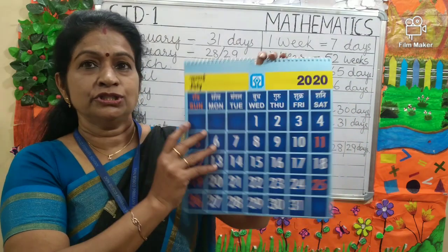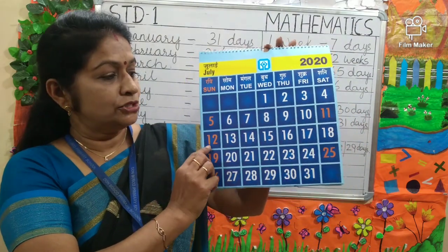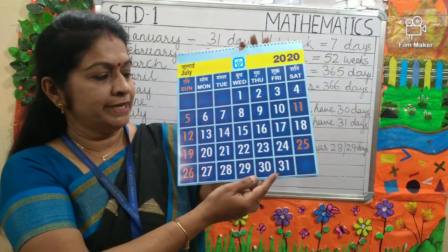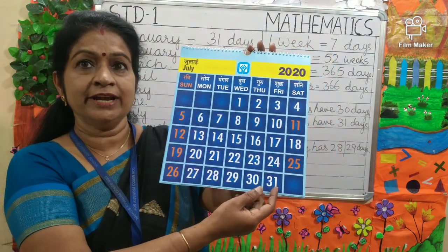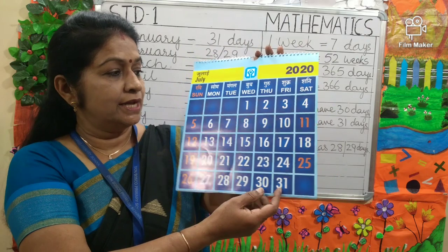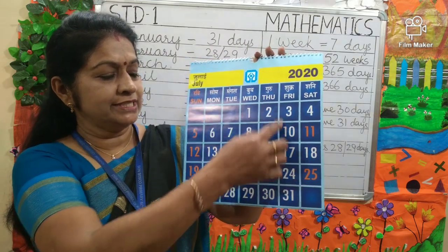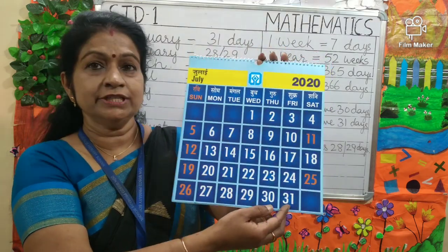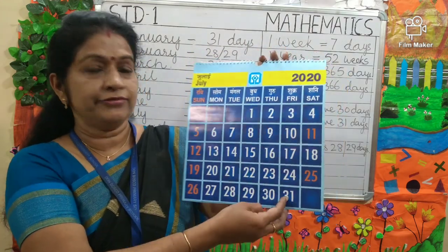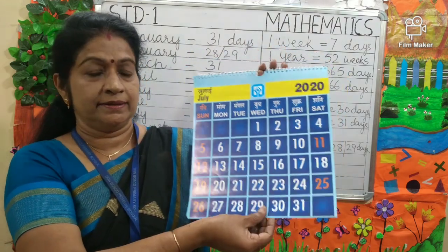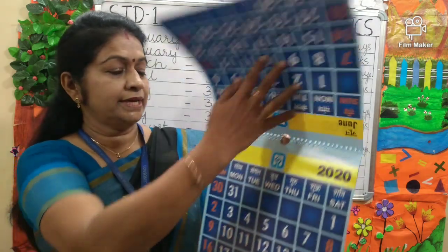Now July — July has how many days? It has 31 days. Can you tell me which day is 31st July? It is Friday.